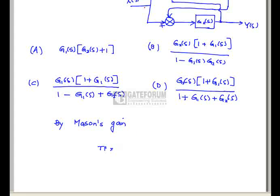First forward path is G1. If we remove the forward path, there are no individual loops as well as there are no two non-touching loops. Hence delta equals 1.